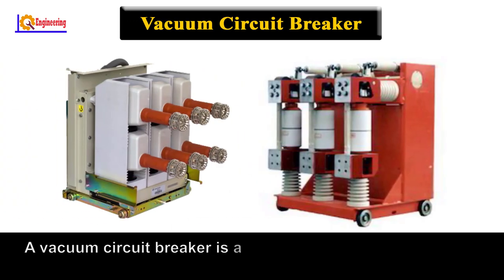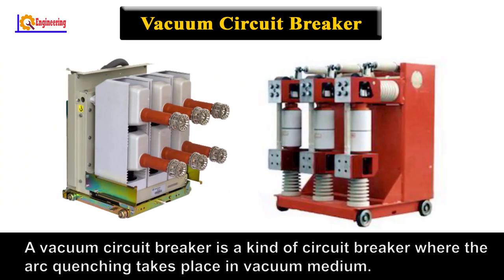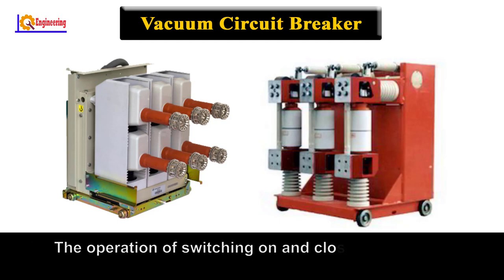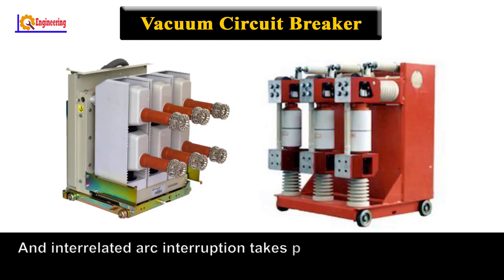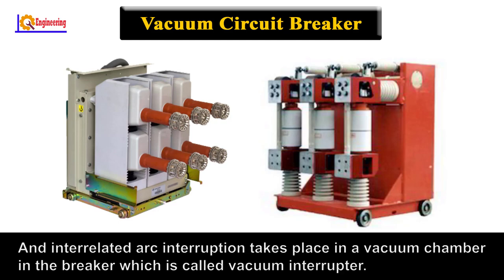Vacuum circuit breaker. A vacuum circuit breaker is a kind of circuit breaker where the arc quenching takes place in a vacuum medium. The operation of switching on and closing of current-carrying contacts and interrelated arc interruption takes place in a vacuum chamber in the breaker, which is called a vacuum interrupter.